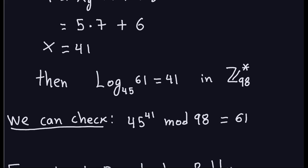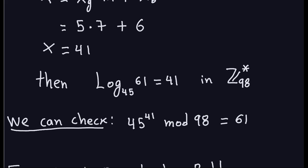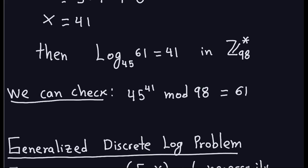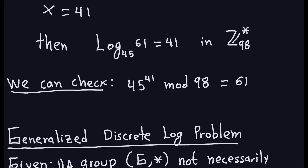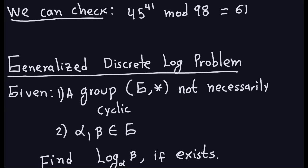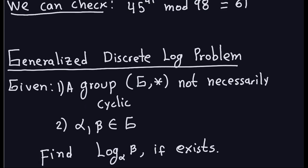This is another example of the baby-step giant-step algorithm for computing discrete logs. Of course, if the numbers are large this is not going to be feasible — it works here because the numbers are small and the tables are short. For very large numbers the tables would be huge and the computation impractical, though it is still better than the brute-force approach.